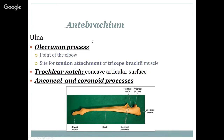The ulna is called the antebrachium or forearm. It has an olecranon process and an anconeal process. There's a trochlear notch that fits right into the humerus. The olecranon process is that point of the elbow. It's the site for tendon attachment of the triceps brachii muscle. The trochlear notch is a concave articular surface, and the anconeal and coronoid processes — remember these words because later when we talk about diseases, they will become very important.